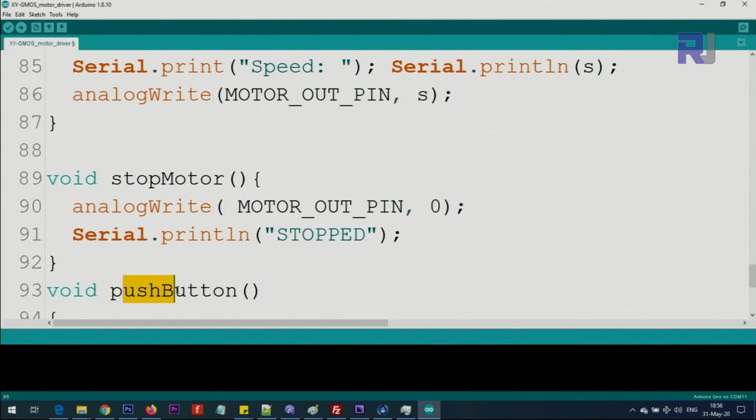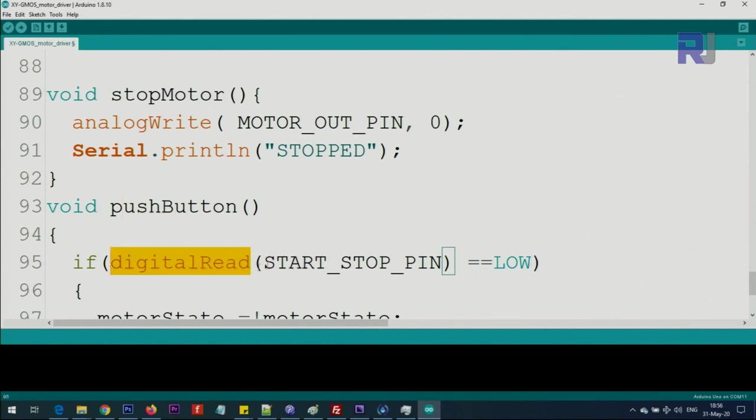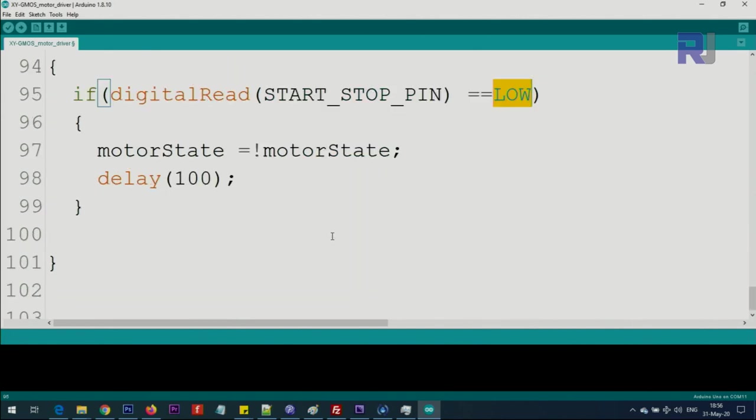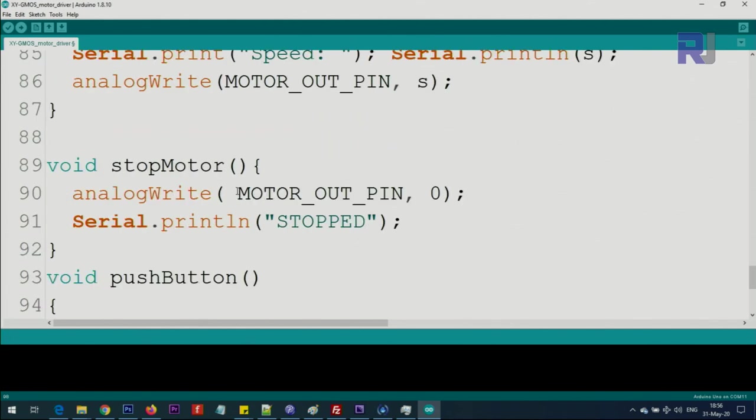Push button is a function - we use digitalRead start/stop pin. If it is equal to low, low means when you press the push button, then we get the stop state of the motor and toggle it or reverse it. If this was equal to 1 or run, we get run and invert it. Not of 1 makes it 0, so 0 will be stored here. Next time if it is 0, when you invert it, it will be 1. This is just toggling. We give it 100 milliseconds so when the person pushes the push button it gives it a little time. That's the full explanation of the code.